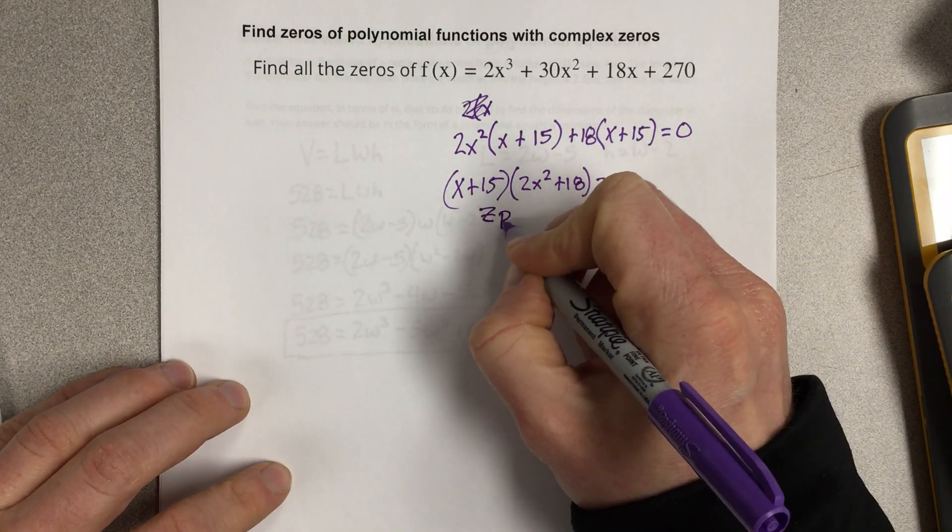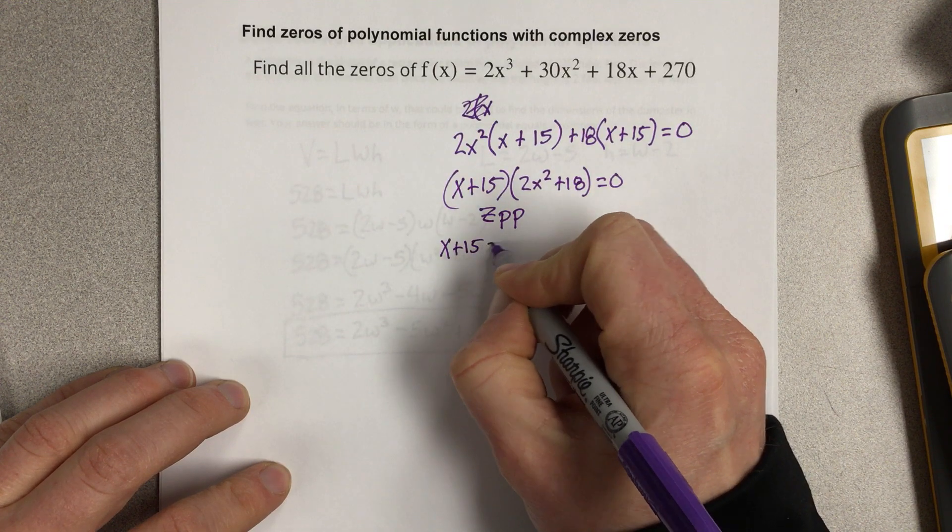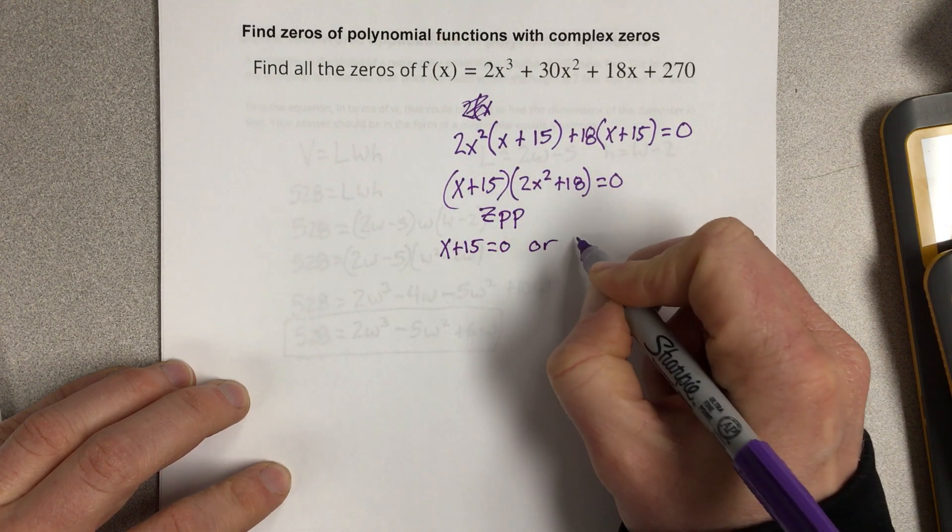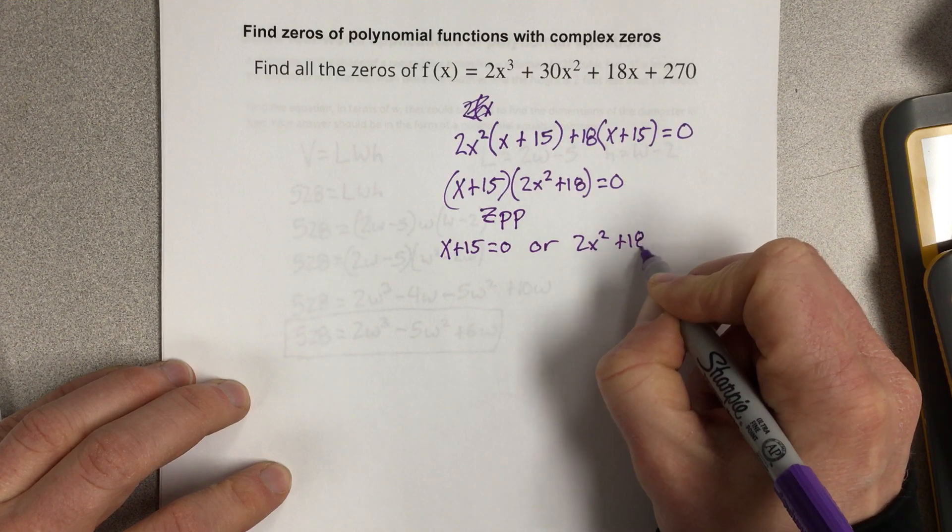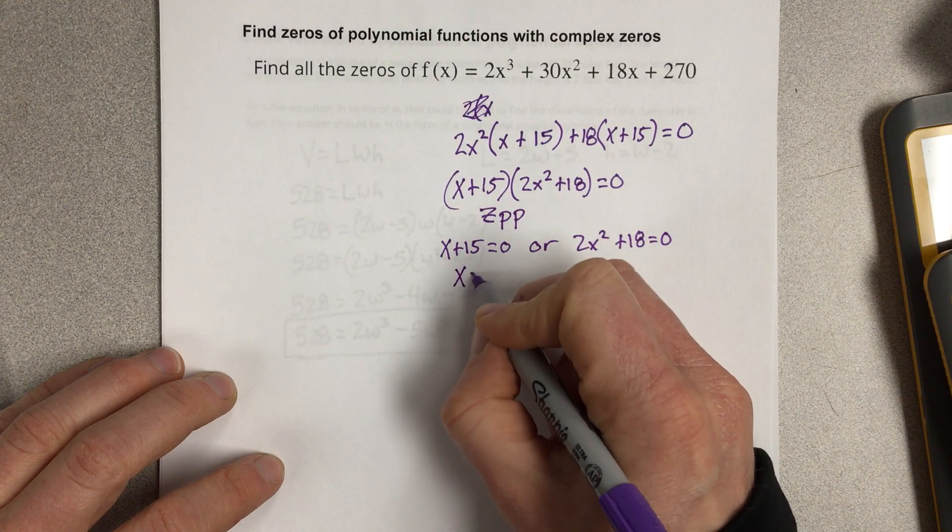Let's use the zero product property, which says that x plus 15 is equal to zero or 2x squared plus 18 is equal to zero. So I get x is equal to negative 15.